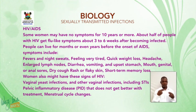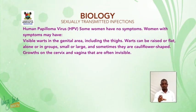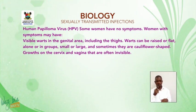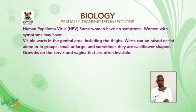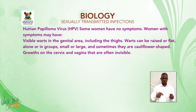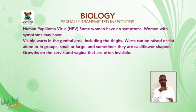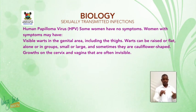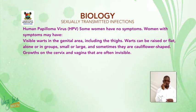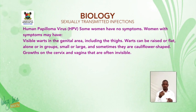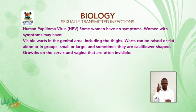Human papillomavirus (HPV): some women have no symptoms. Women with symptoms may have visible warts in the genital area including the thigh area. Warts can be raised or flat, in lumps or in groups, small or large, and sometimes called cauliflower-shaped. There may also be growths on the cervix and vagina that are often invisible.